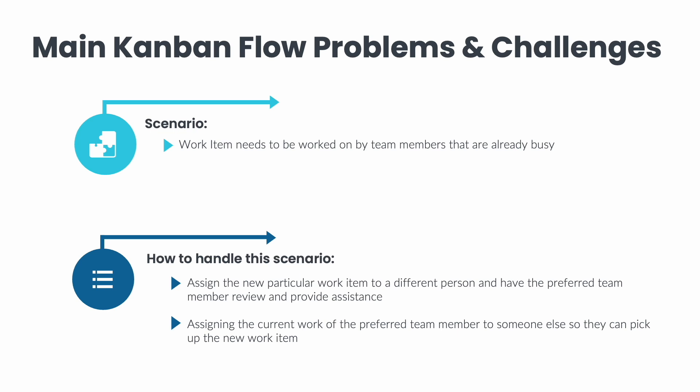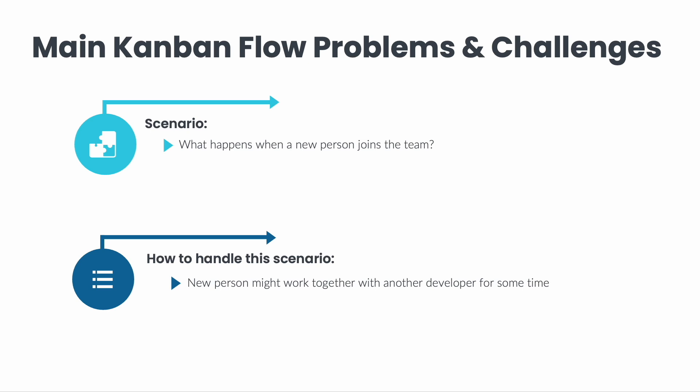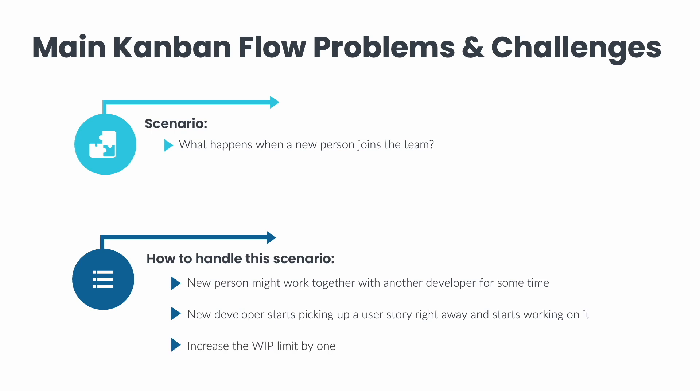The other option is assigning the current work of the preferred team member to someone else so they can pick up the new work item. Another Kanban challenge is what happens when a new person joins the team — let's say a developer. This person needs to be onboarded for some time. One approach is having the new person work together with another developer until they learn more about the team. Another approach is having the new developer pick up a user story right away, even if it takes longer to complete. From the Kanban perspective, you would most likely want to increase the WIP limit by 1, and once the developer can handle more work, potentially by 2. Don't forget to adjust your WIP limits as your team changes.